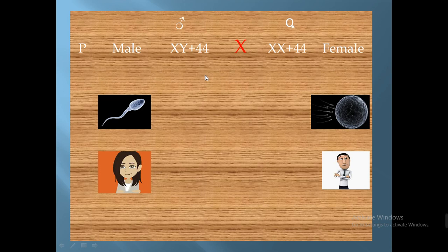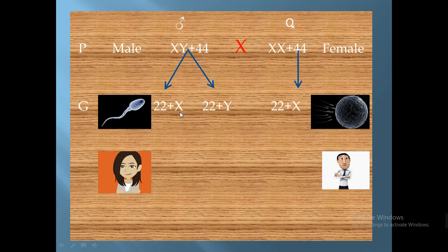Let's look at the gametes. When the cells of the testes divide meiotically, they produce half the number of chromosomes in the sperms. The sperm types are different: some sperms will contain 22 plus X, and other sperms will contain 22 plus Y. So the 44 autosomes divide equally between sperm types, while the XY chromosomes separate into two types of gametes.